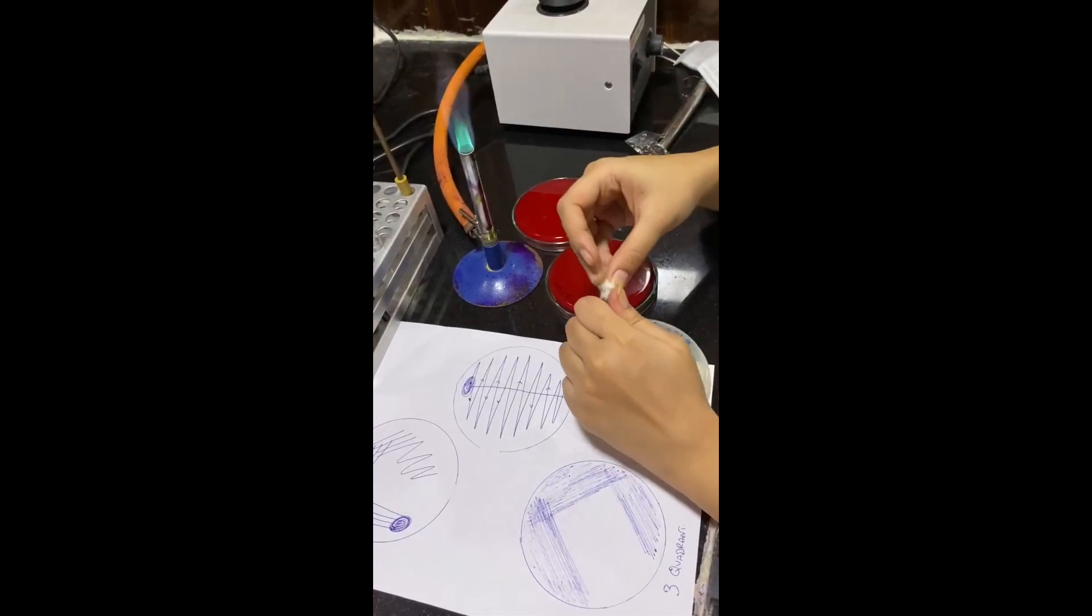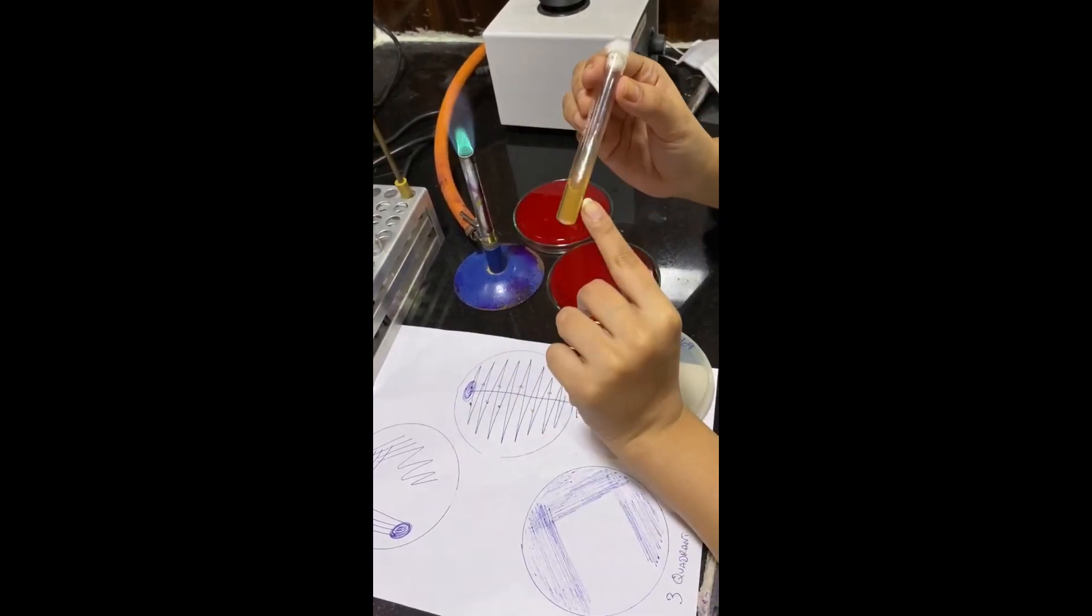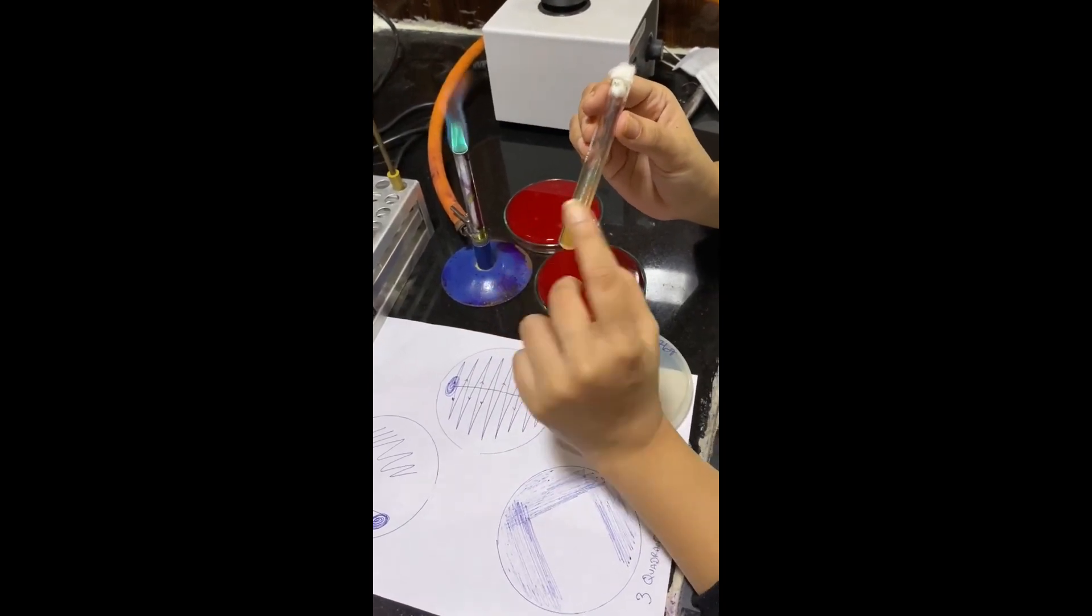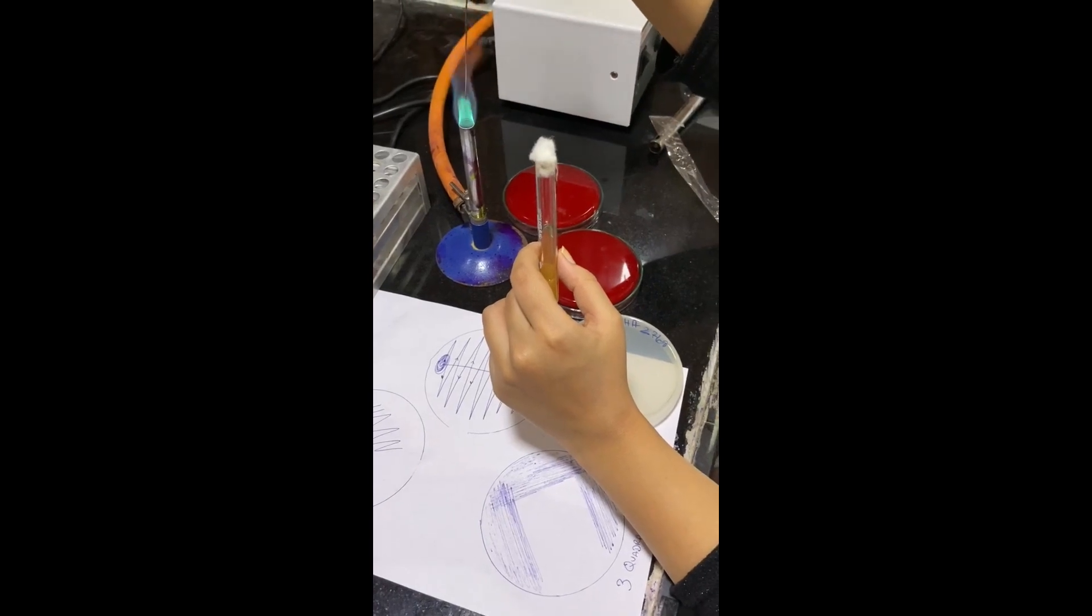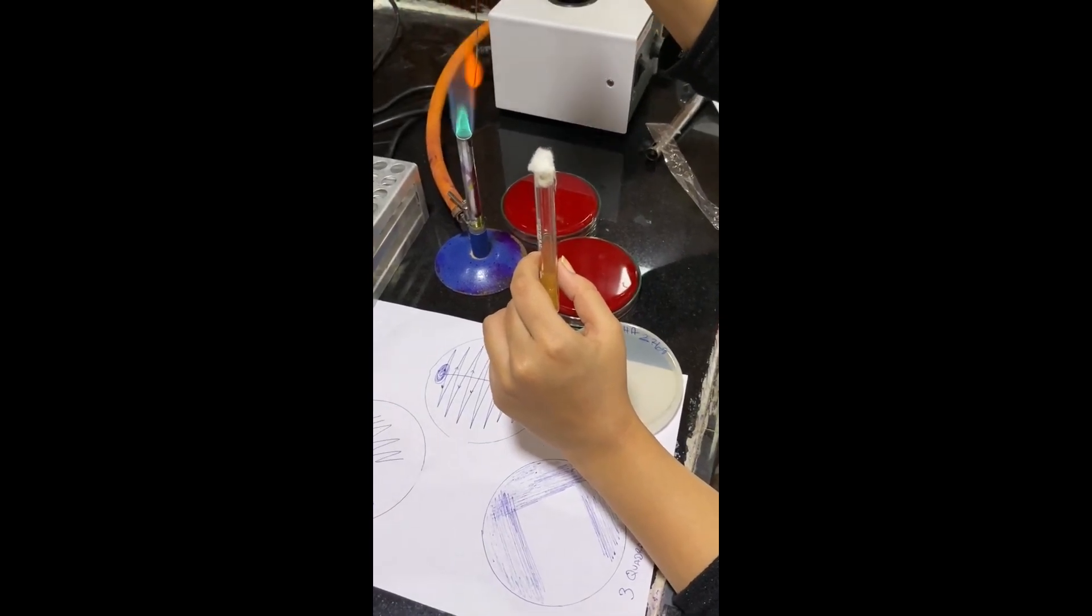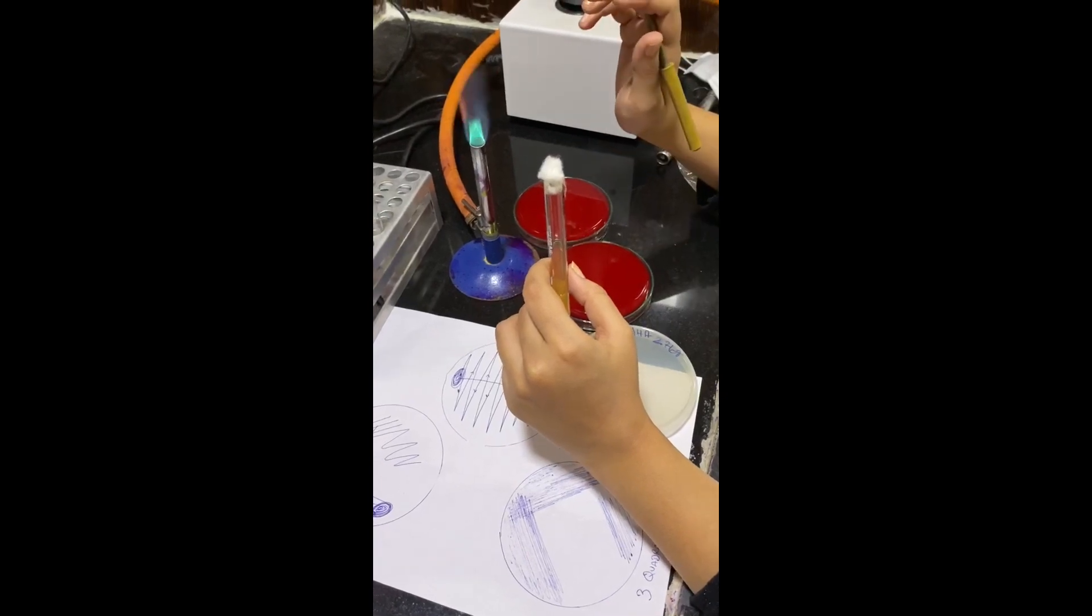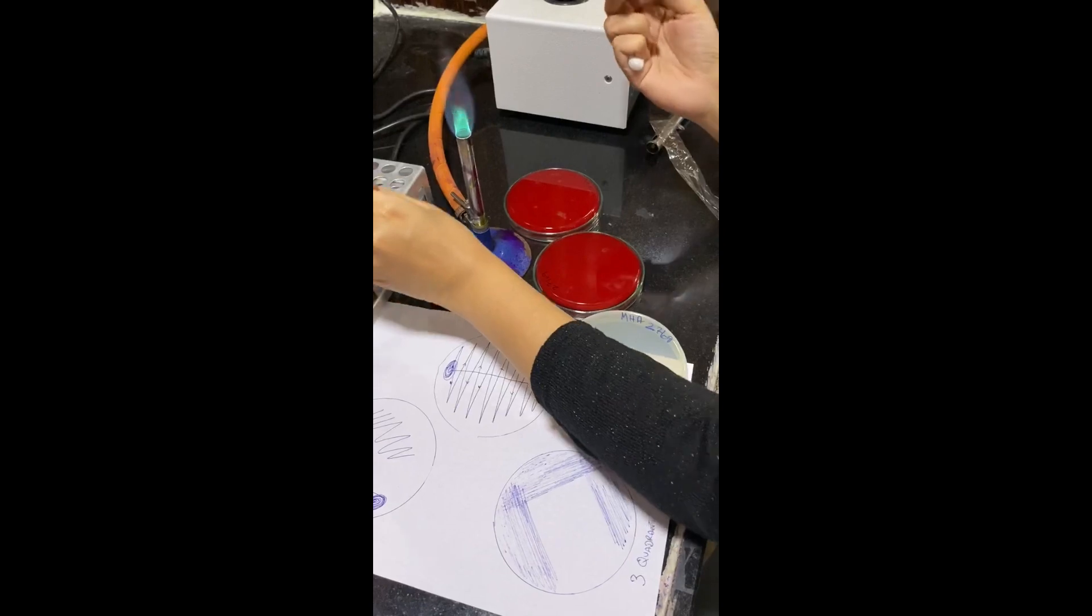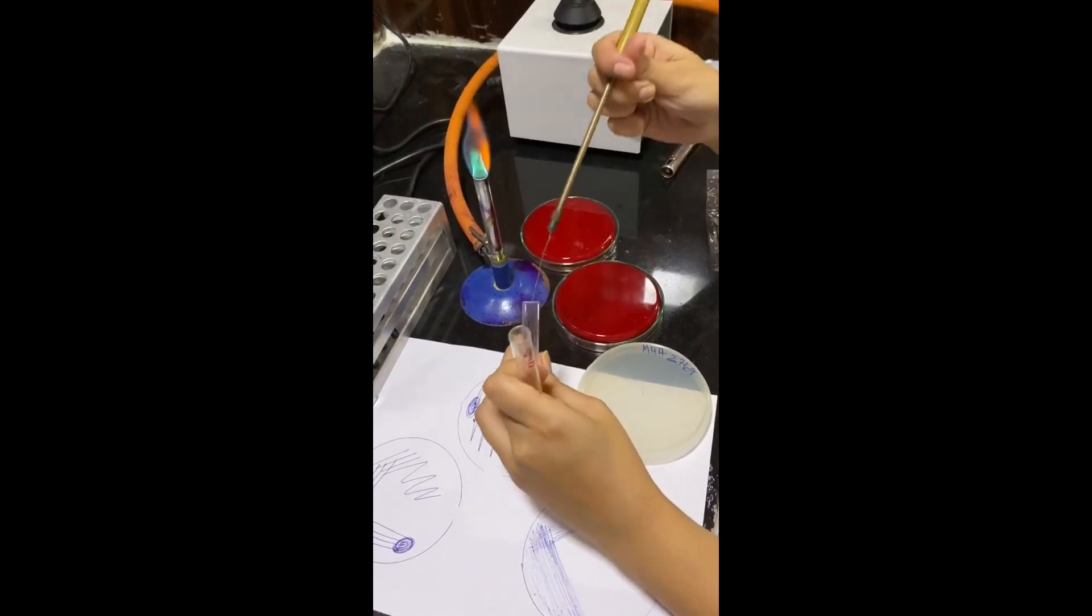Now for the stab method, which usually follows the stroke method for better inoculum or gradients of the organism into the media. After sterilizing, wait for 30 seconds. Again pick up a colony from a media or immerse in the liquid medium.